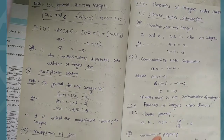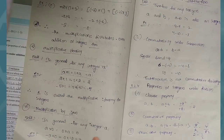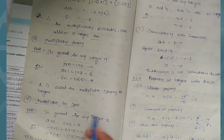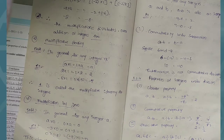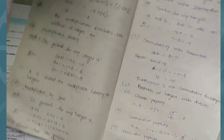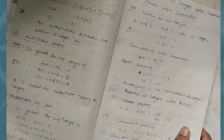Next, multiplication by 0. In general, for any integer a, a into 0 equals 0. The product of any integer with 0 is 0.